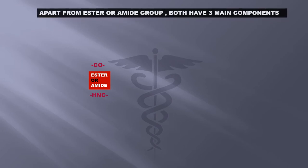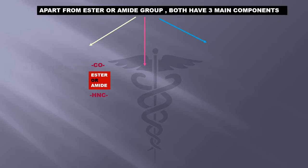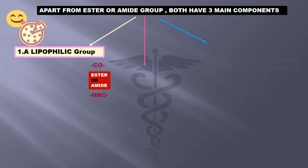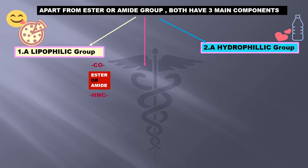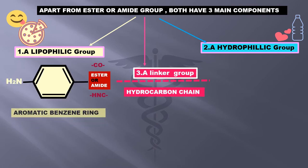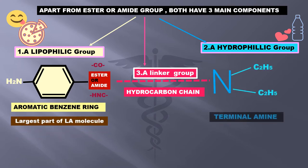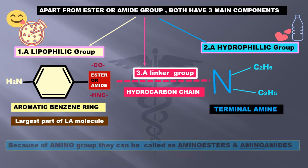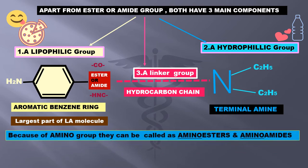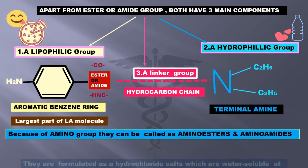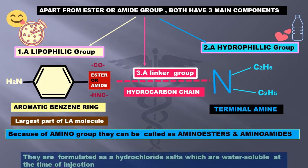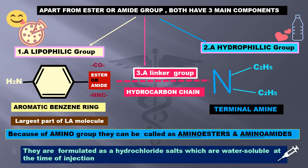When we look at their molecular structure, apart from the ester or amide group, both have three essential components: one, a lipophilic group; two, a hydrophilic group; and in between, three, a linker group. The lipophilic group is a benzene ring and is the largest part of the LA molecule. The hydrophilic group is an amine located at the end, called the terminal amine. Because of this amino group they can be called amino esters or amino amides. They are formulated as hydrochloride salts which are water soluble at the time of injection.